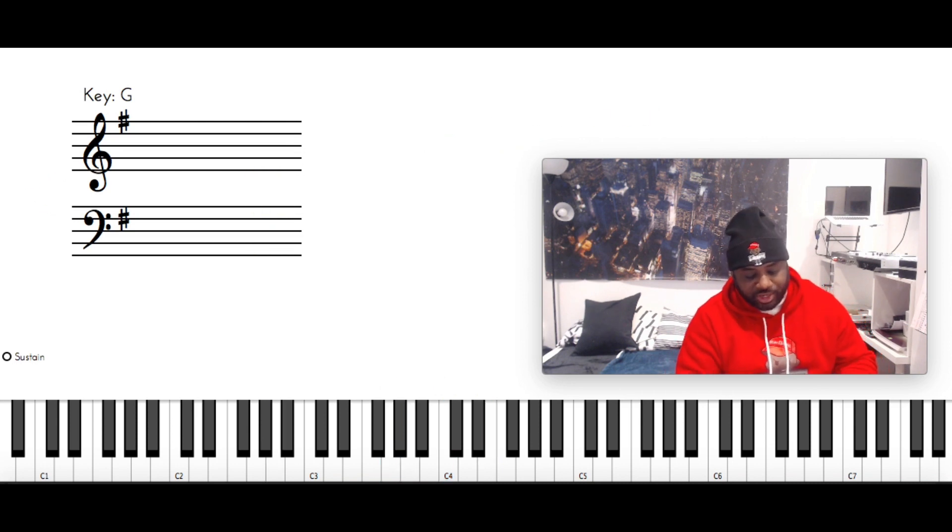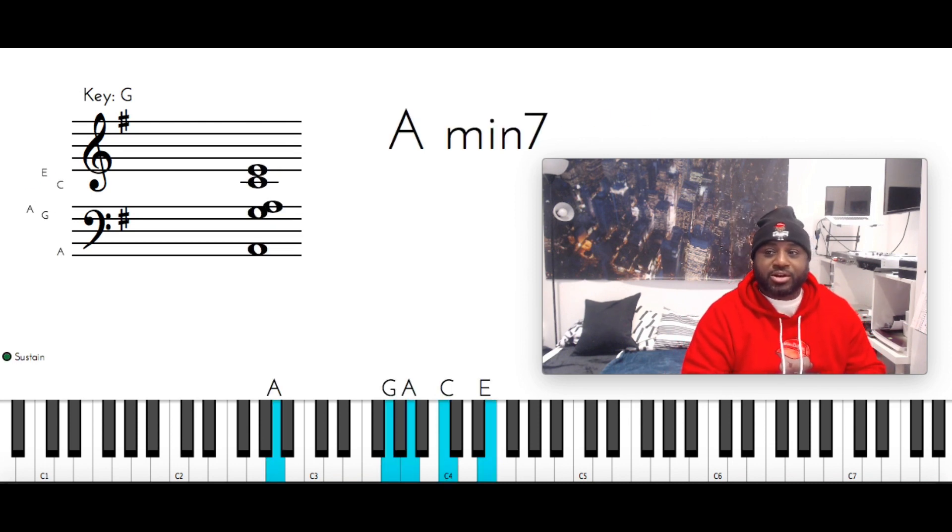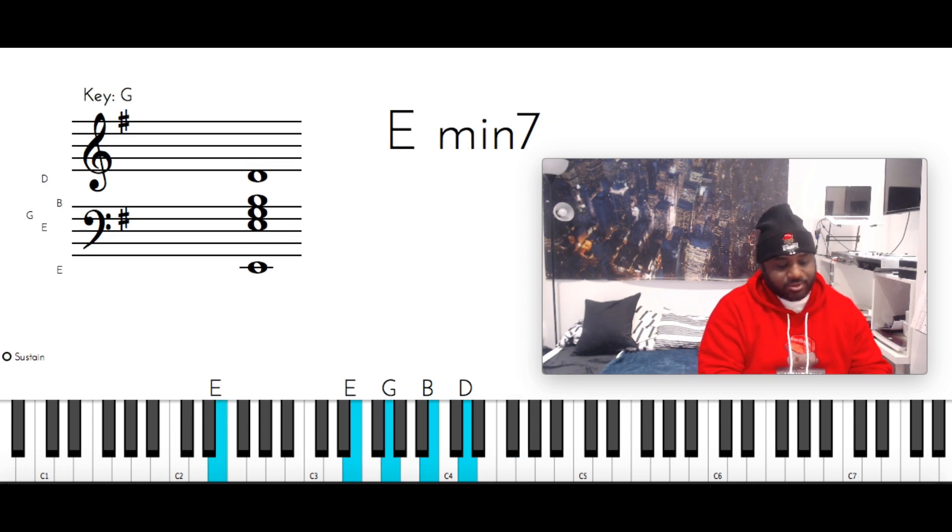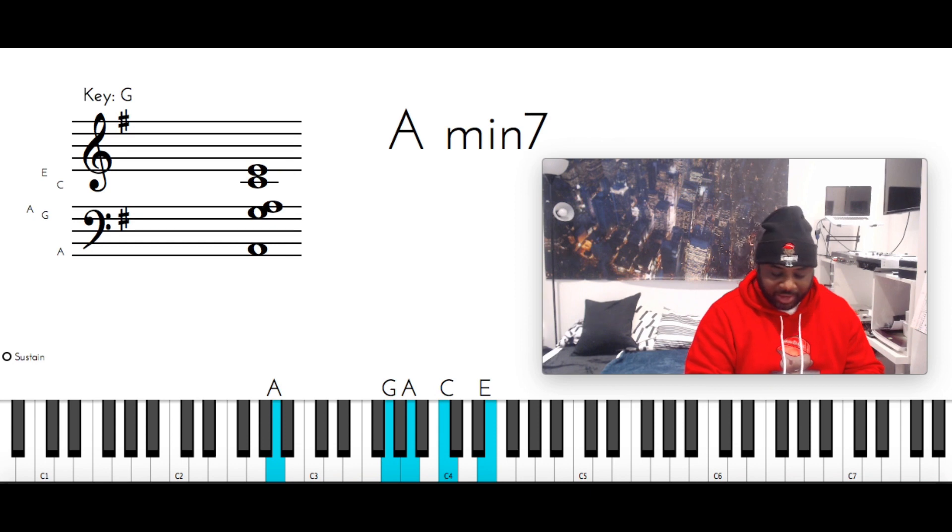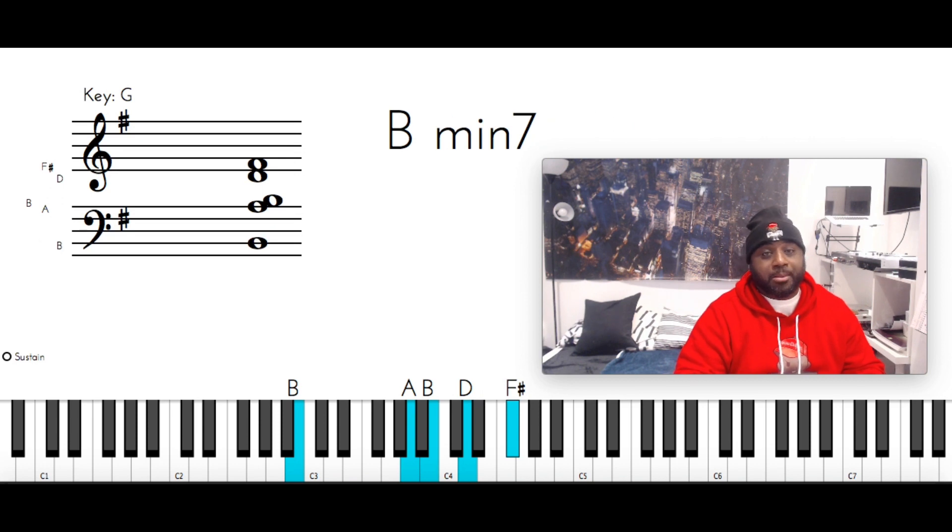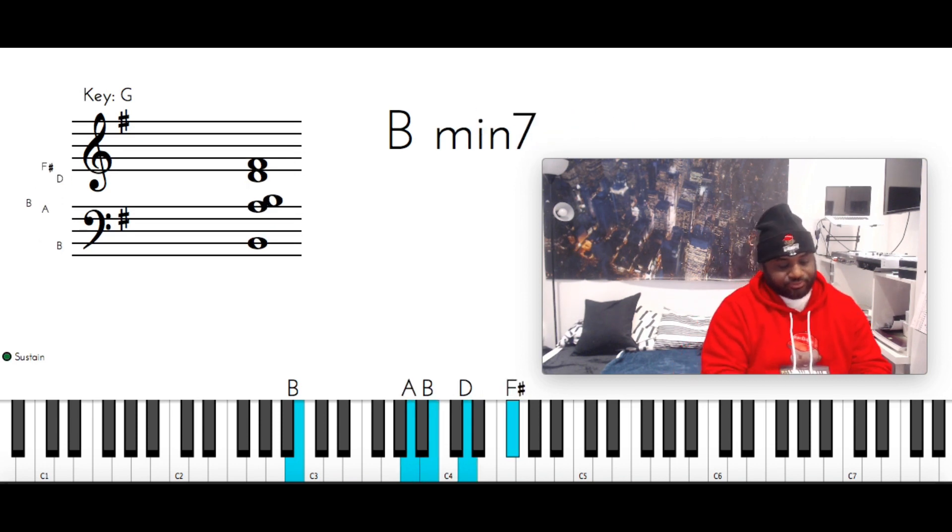Now when you get into the verse, you got A minor 7, B minor 7, E minor 7. So that is A with the left, G, A, C, and E. B with the left, A, B, D, and F sharp to the E minor 7. E, E, G, B, and D.